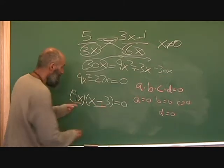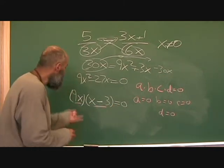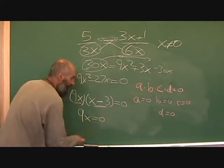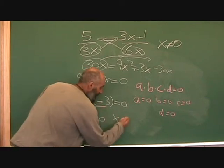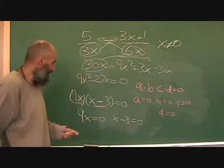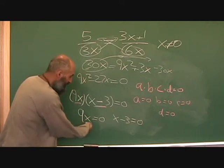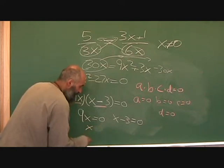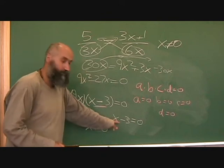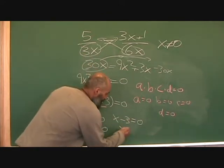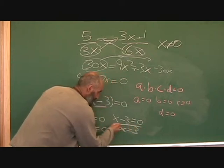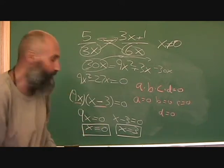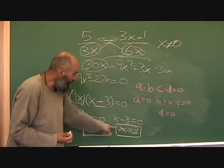So when we have two terms multiplied together equaling zero, we set each one equal to zero. Here: 9x = 0, and x − 3 = 0. For the first, divide by 9 — zero divided by nine is zero, so x = 0. For the second, move the 3 over, so x = 3.